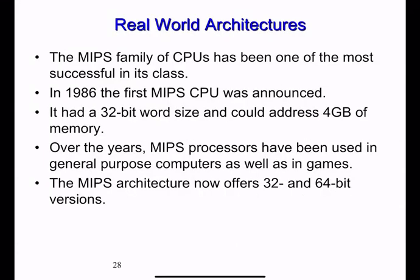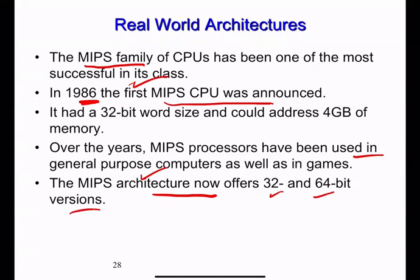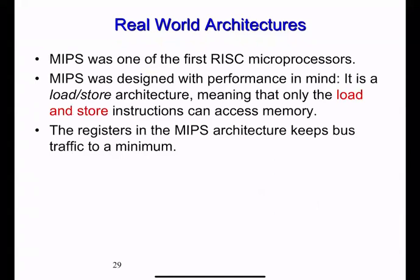In a RISC architecture, memory is accessed only through load and store instructions. Load retrieves information from memory into a register; store writes information from a register to memory. These are the only two operations for memory access. MIPS is one of the most successful RISC families, first announced in 1986, and is available in 32-bit and 64-bit versions.